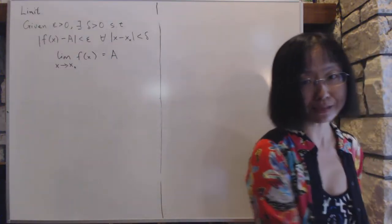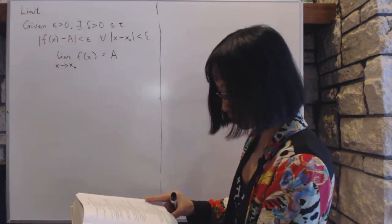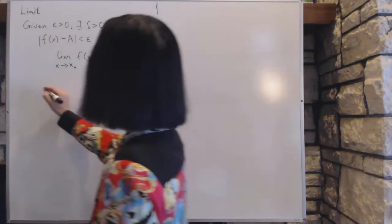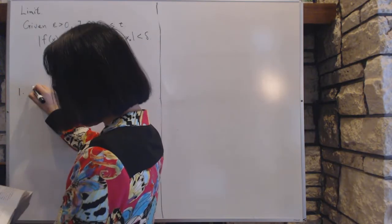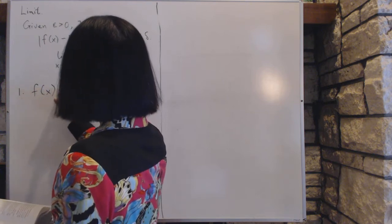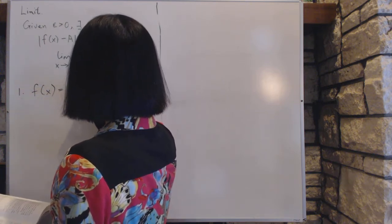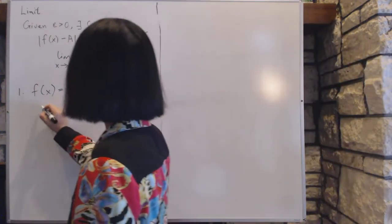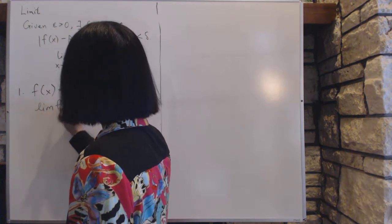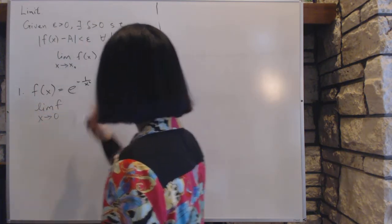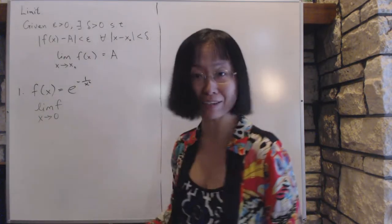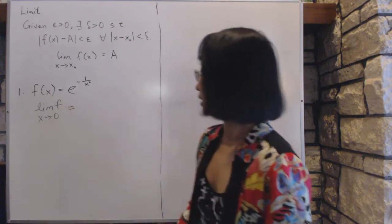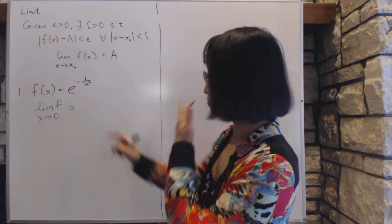To demonstrate how this works, we'll do a couple of examples. Example one: let f(x) equal e to the power of negative one over x squared. What is the limit of f as x approaches zero? We ask about zero because it is the only point we cannot directly calculate.